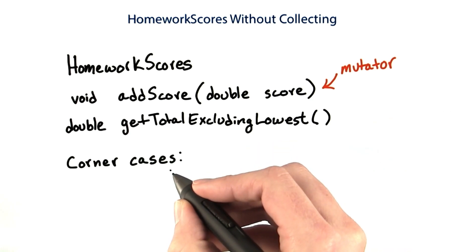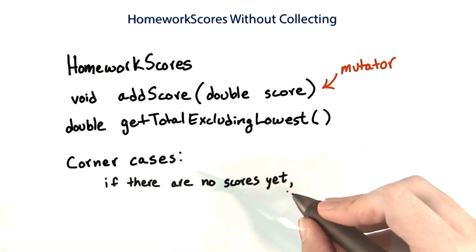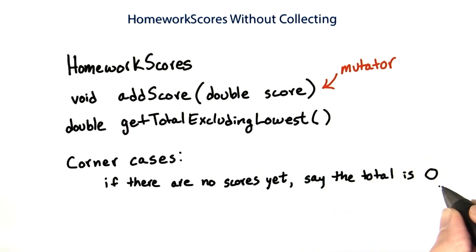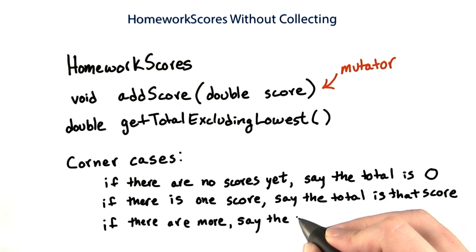There are a few corner cases I'd like you to think about that have special behavior. If there are no scores yet, say the total is zero. If there's one score, say the total is that score. If there are more, say the total is the total excluding the lowest.